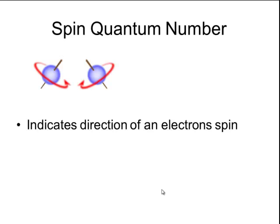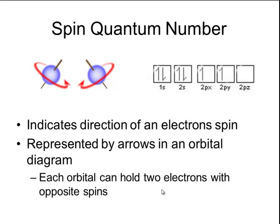The last quantum number is called a spin quantum number. And this indicates the direction of an electron spin. So electrons actually spin upon their axes just like the Earth does. And they can spin in a clockwise direction or a counterclockwise direction, usually described as up or down in chemistry. When we draw orbital diagrams, we represent the spin of an electron by using arrows. Each orbital, which remember is represented by a box or a line, can hold two electrons. And those electrons will have opposite spins, one with an up spin and one with a down spin.